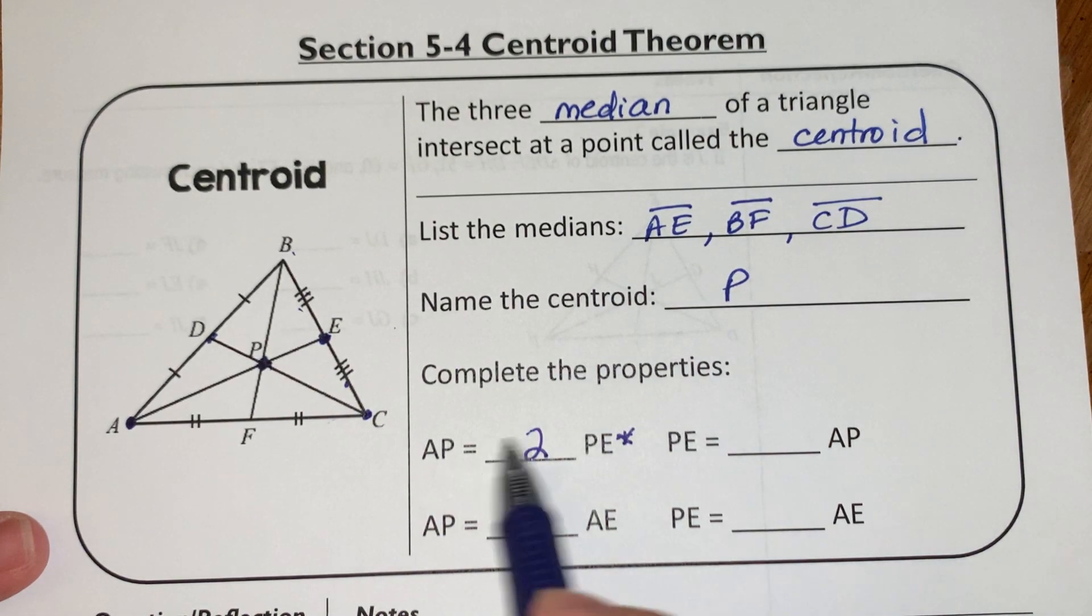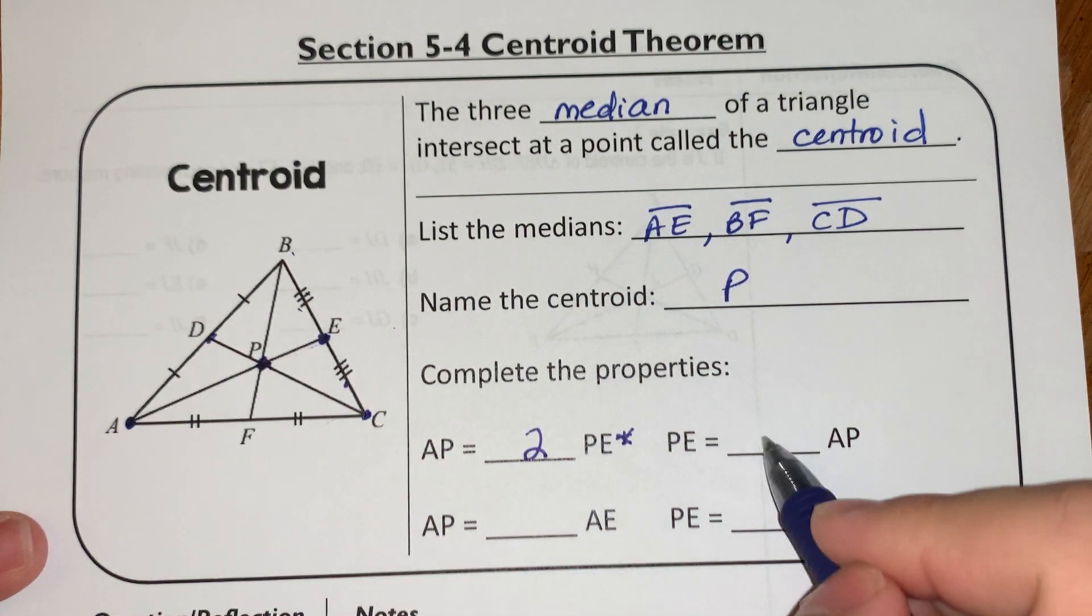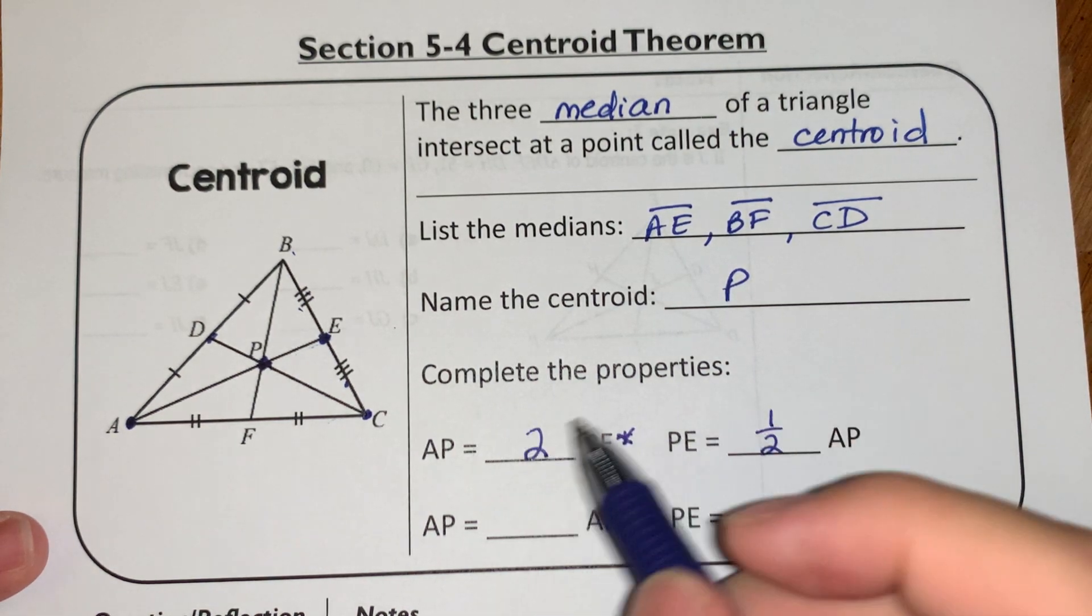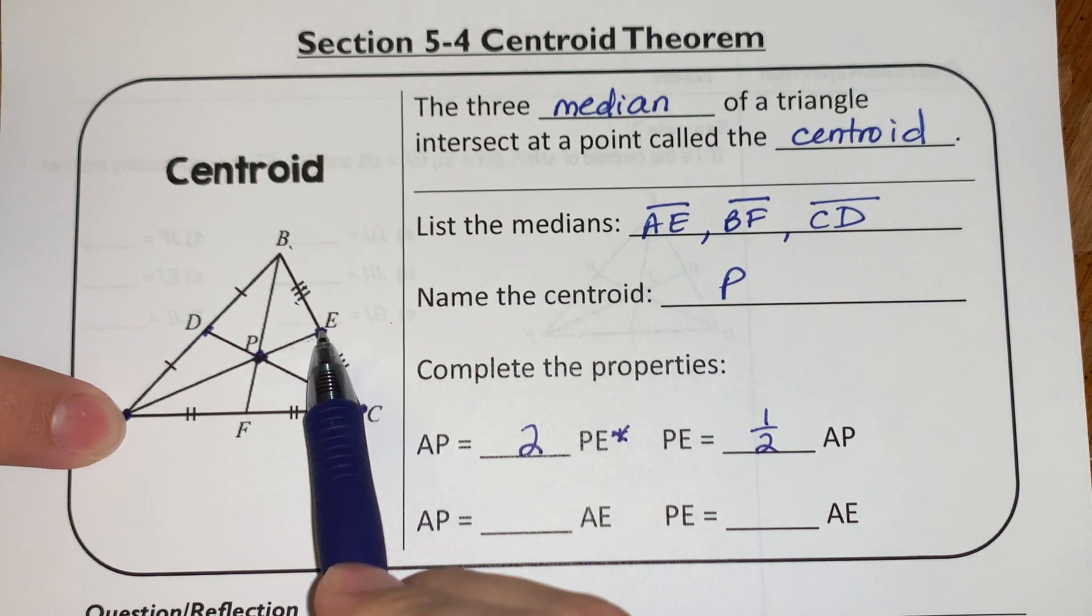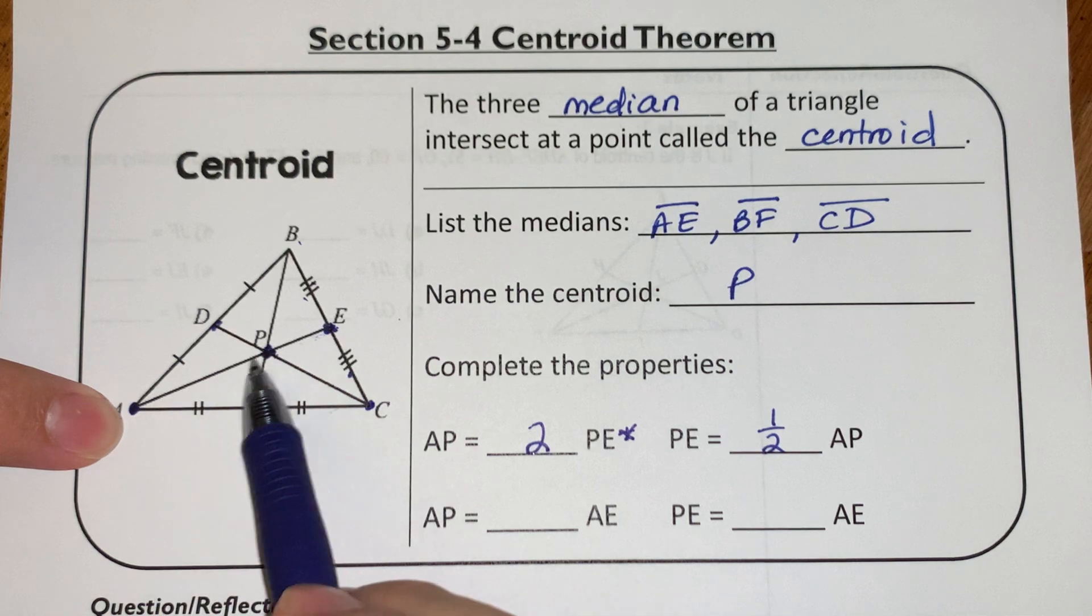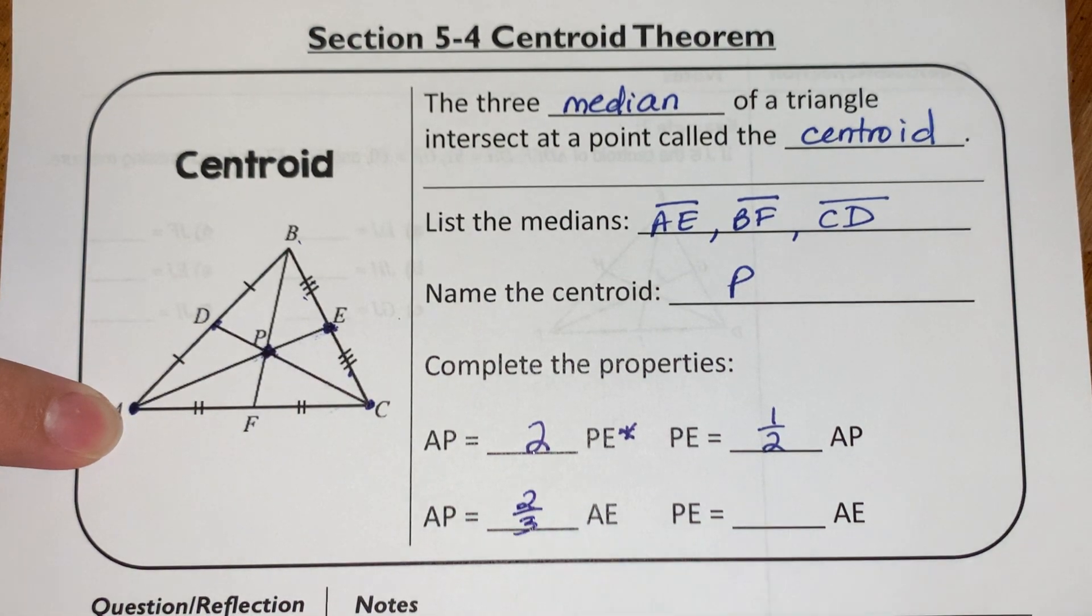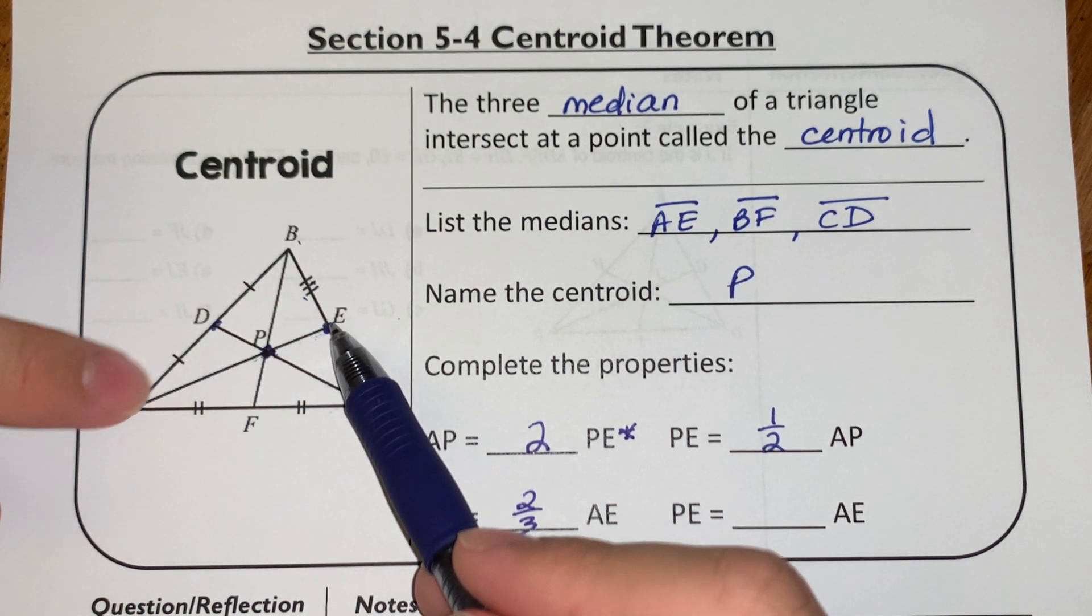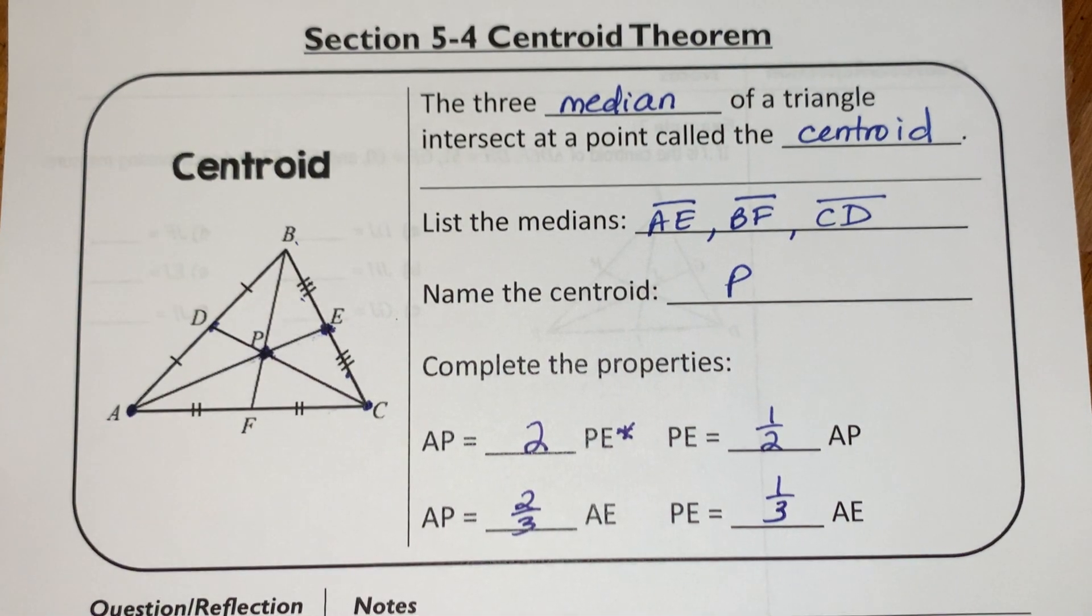Another way you can think about it is kind of the reverse of that. This is half the distance of this. So PE is half of the distance of AP. You can also think about it in terms of looking at the entire median. The entire median is this whole length right here, and AP would essentially be two-thirds of the whole thing. Same thing with PE. When compared to the entire length of the median, PE is one-third of that entire length.